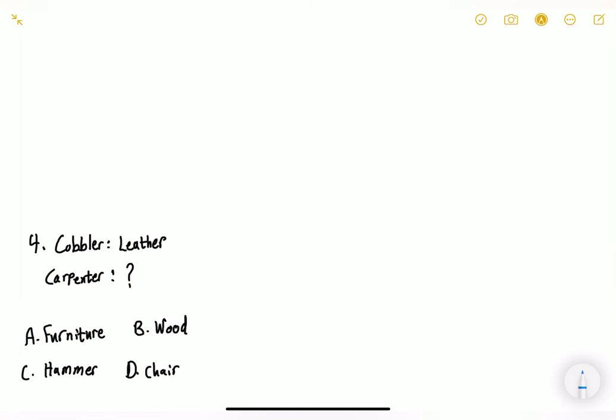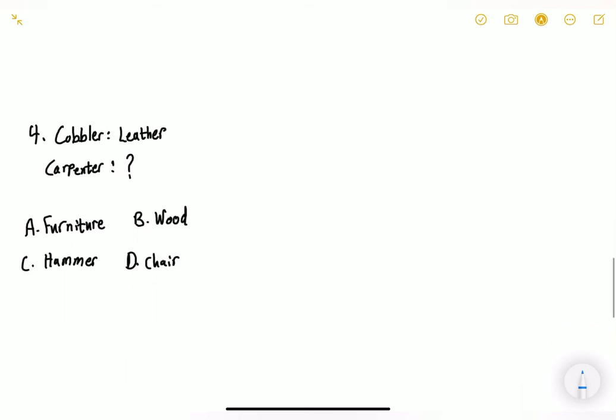So question number four says cobbler, leather, carpenter, question mark. So we have to identify the relationship, first of all. The relationship between a cobbler and leather is that how a cobbler uses leather to make shoes, a carpenter, what does a carpenter use to make furniture? So as we said, the cobbler uses leather to make shoes. That's the relationship between cobbler and leather.